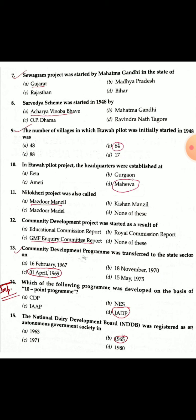The Community Development Project was established on the basis of the Grow More Food Inquiry Committee report. Question 13: The Community Development Program was transferred to the state sector on 1st April 1969 — state authority was transferred to each state.